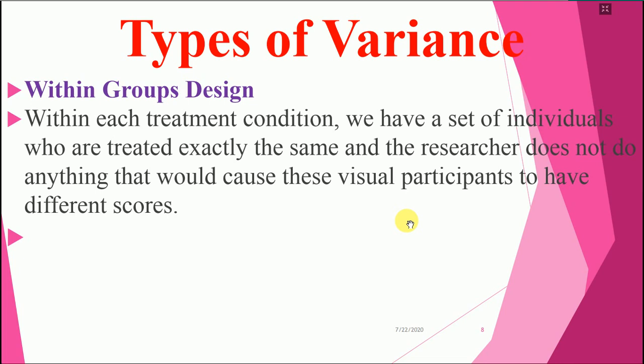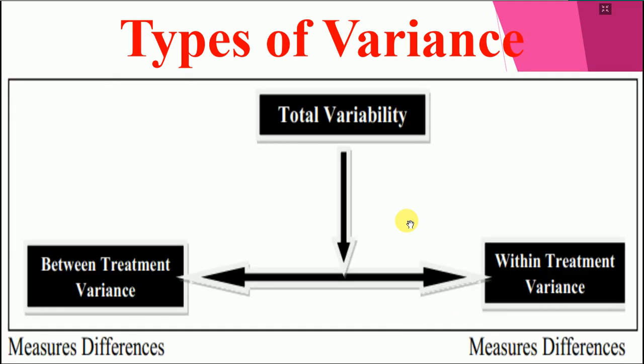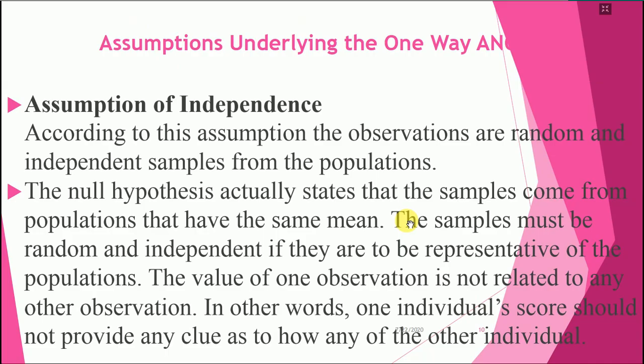Within-group design: within each treatment condition we have a set of individuals who are treated exactly the same, and the researcher does not do anything that would cause these participants to have different scores. You can see through the picture: total variability is composed of between-treatment variance and within-treatment variance.